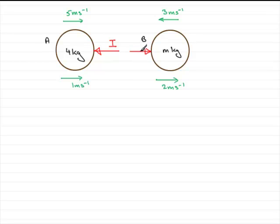If we consider the impulse acting on b it's going to be exactly the same in magnitude as it was acting on a. And we found in the earlier part that I was equal to 16 newton seconds.